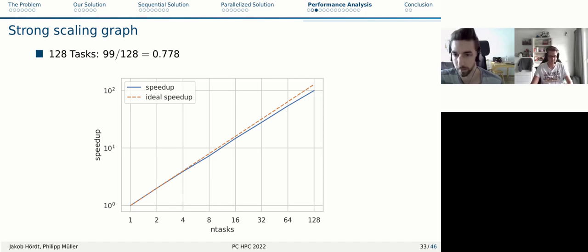Here's our strong scaling graph. In red, there's the ideal speed up like it doubles for each number of tasks increases. And in blue, there's our measured speed up. For example, the speed up for 128 is 99. That leads us to 0.778 of the efficiency that it had with one core, which is quite okay.